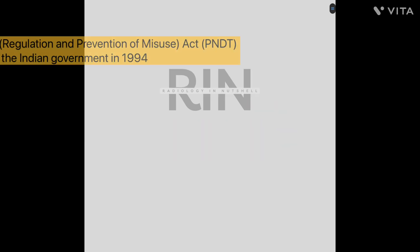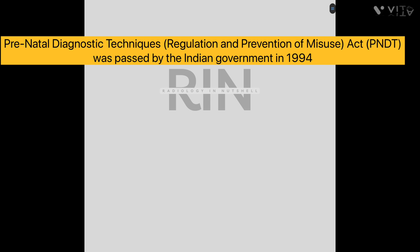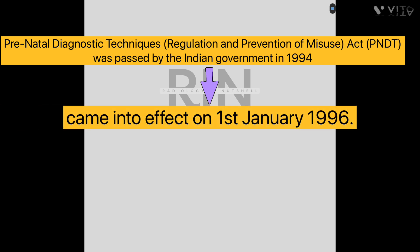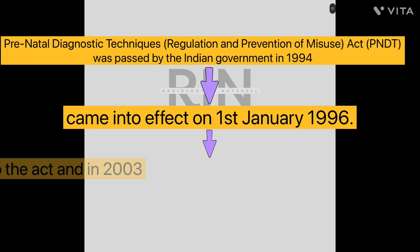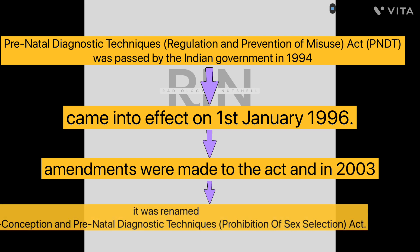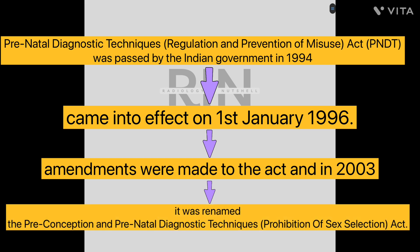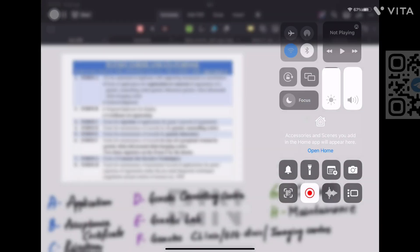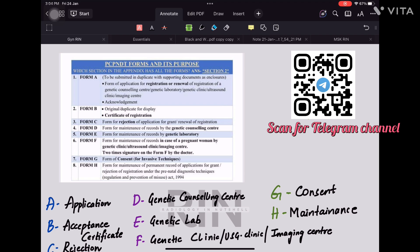A brief history of the Act: it was initially started as only the PNDT Act — Prenatal Diagnostic Techniques — enacted by the Government of India in 1994, and came into effect on 1st January 1996. Amendments were made in 2003, after which the name changed to PCPNDT Act. So it started as PNDT and became PCPNDT in 2003.